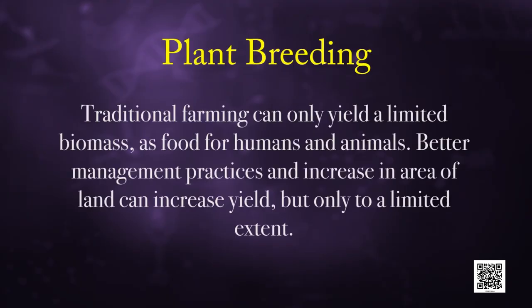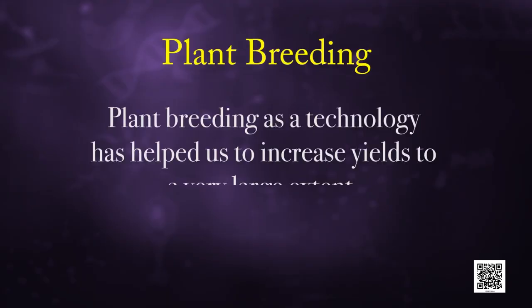Traditional farming can only yield a limited biomass as food for humans and animals. Better management practices and increase in area of land can increase yield but only to a limited extent. After India's independence, one of the main challenges was producing enough food for the increasing population. As only limited land is fit for cultivation, India had to strive to increase yield per unit area from existing farmland. Plant breeding as a technology has helped us to increase yield to a very large extent.